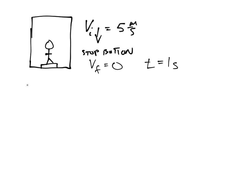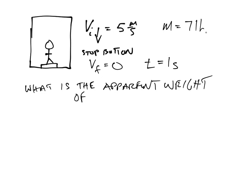The question is, for that one second, what is the apparent weight of this person? Now, the person is the person regularly, the mass of the person is 71 kilos. So what's the apparent weight of the person during this one second?